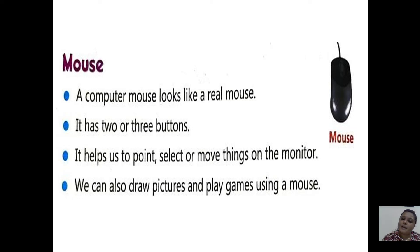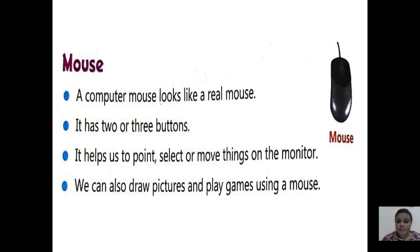The keyboard has alphabet keys and number keys. Now today we are going to learn about the mouse. As you can see on the screen, you have seen the mouse. A computer mouse looks like a real mouse — it has a tail also. It has two or three buttons and it helps us to point, select, or move things on the monitor.